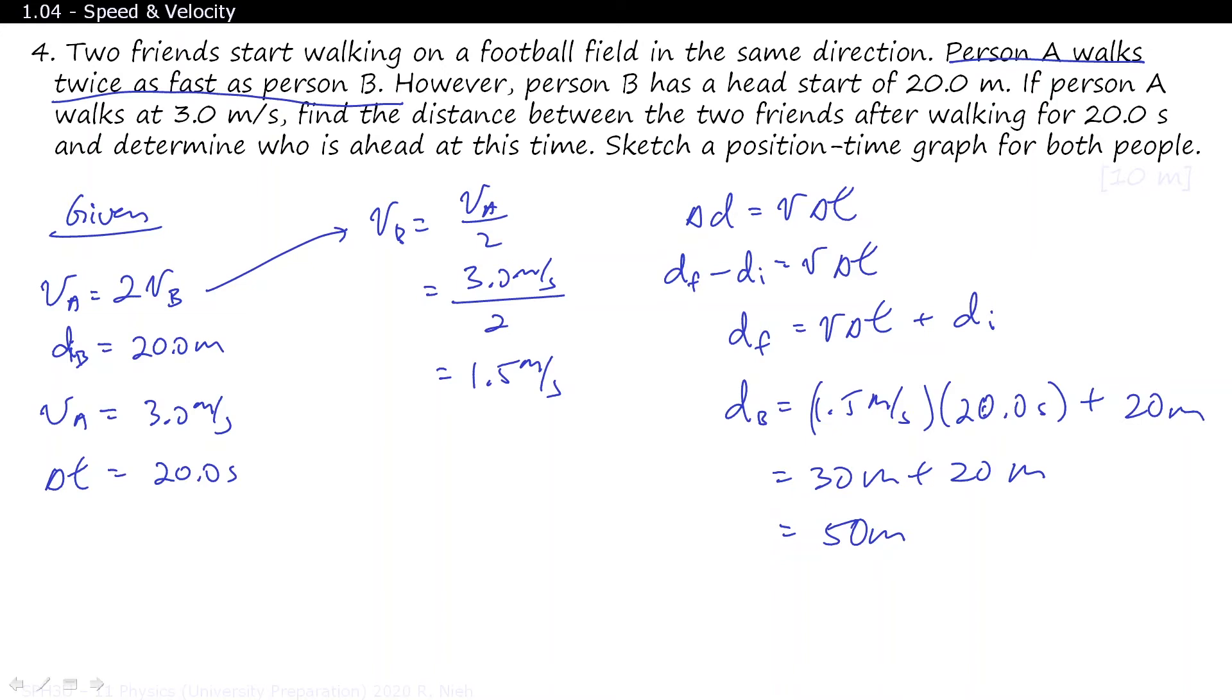Now, let's try to figure out person A. Person A equals V delta T plus DI. Person A is traveling at 3.0 meters per second for a duration of 20 seconds. But it's starting at the reference point of 0. And that will give you 60 meters. And we can see that DA is greater than DB.